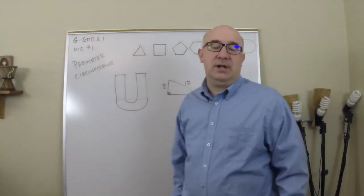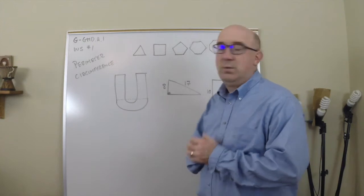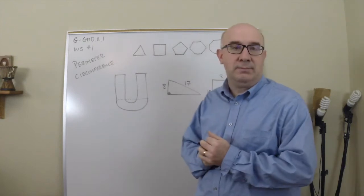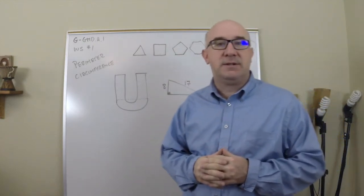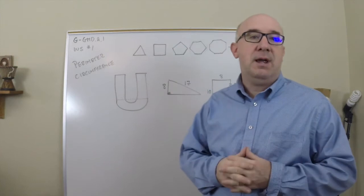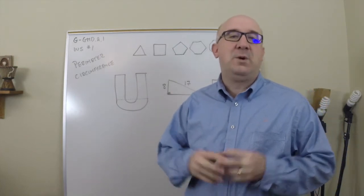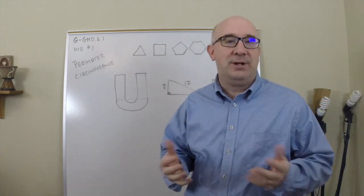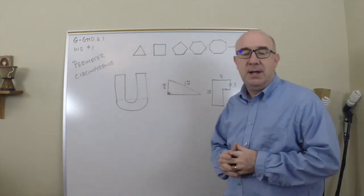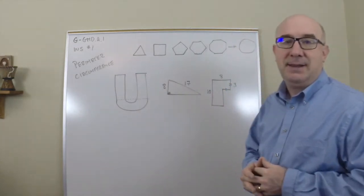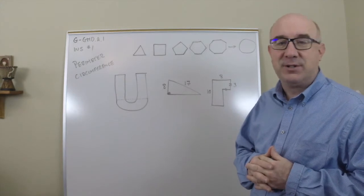Alright, let's take a look at GGMD A1 Worksheet No. 1. This is just a nice introduction into the basics of perimeter and circumference. We quickly jump to more interesting shapes just because these are old topics for us, and at this level we need to go after something a little more interesting.